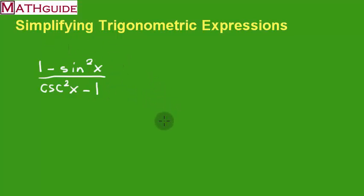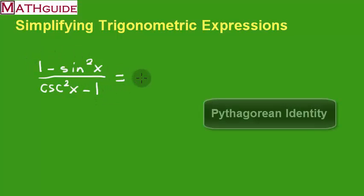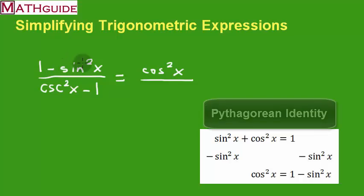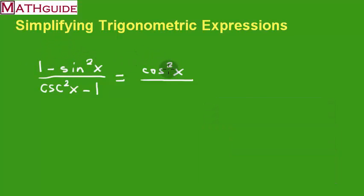So this is a fairly complicated-looking expression for our first problem, and what I'd like to do is kind of shrink it. It turns out that the first problem here has a numerator that we can simplify. This is related to the first Pythagorean identity. It turns out that that is equal to cosine squared of x. So that's one step in our simplification process — we went from a very complicated-looking expression down to a less complicated expression, and I like to do the same thing with the denominator.